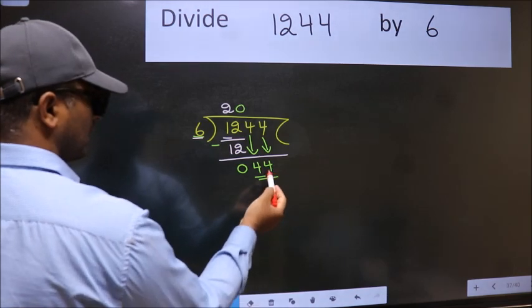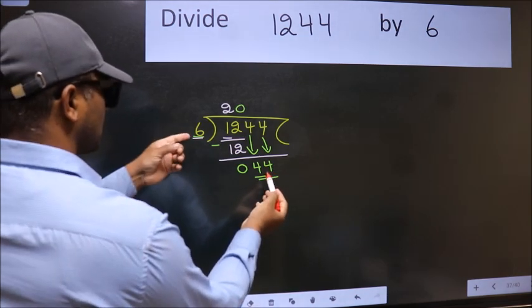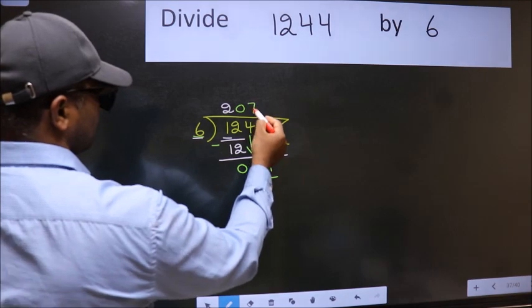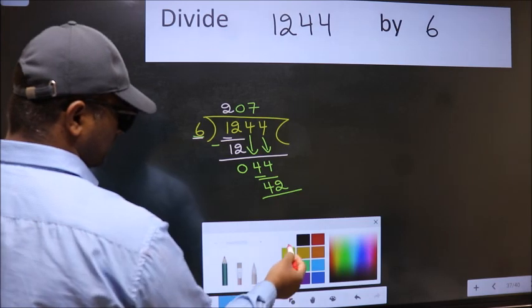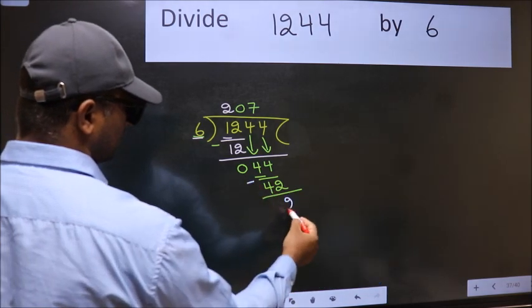So 44. A number close to 44 in 6 table is 6 times 7, 42. Now we subtract. We get 2.